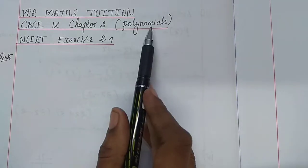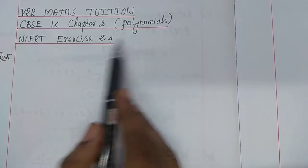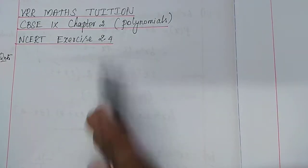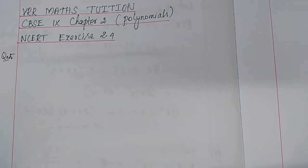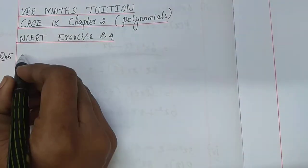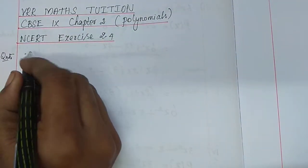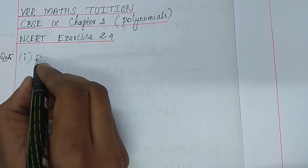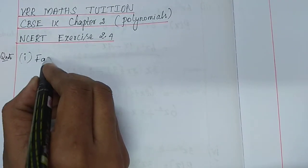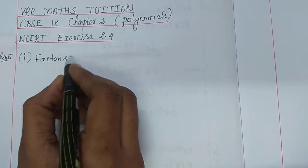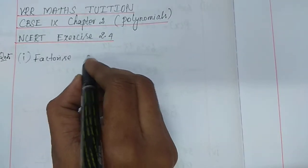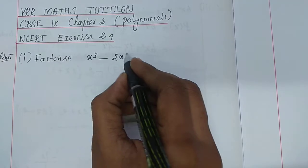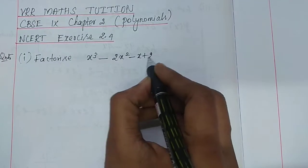Chapter 2 Polynomials in CRT, Exercise 2.4, Question number 5, Division number 1. Factorize x cube minus 2x square minus x plus 2.